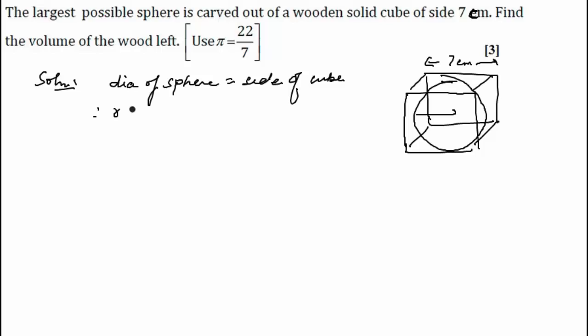Therefore, radius will be equal to 7 by 2 centimeter, half of it. So now if we look, we need to find the volume of the wood left. That will be volume of the cube minus volume of the sphere.